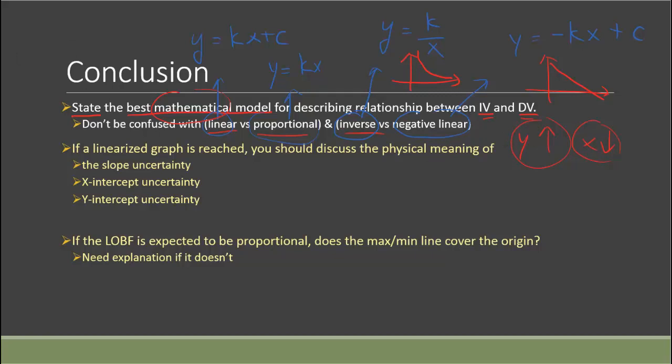And here is something more you can include in the conclusion. Some people may like to include in the evaluation instead. But I would say if you include in the conclusion, that's actually fine as well. If you have a linearized graph, you could actually discuss the physical meaning of the slope. Because think about, you should have the max/min line, right? So max/min line probably something like this. And then there should be two slopes that you find and you should be able to find uncertainty by using the half range method. If the slope has a physical meaning, then that means this uncertainty has a physical meaning too. So maybe representing a certain physical quantity's uncertainty. So try to find out. You may find it useful later on when you do the evaluation for comparing with the literature.